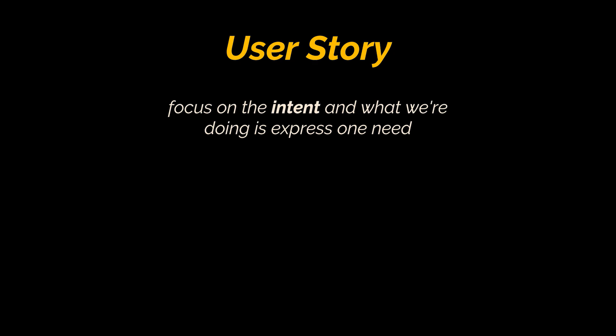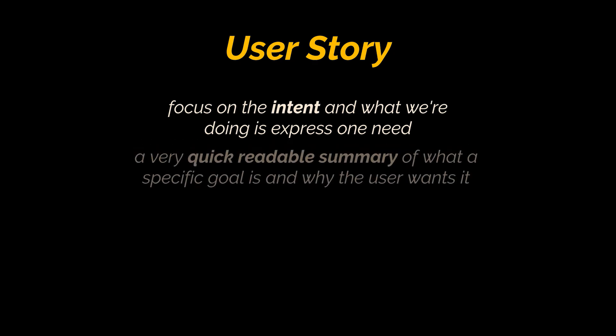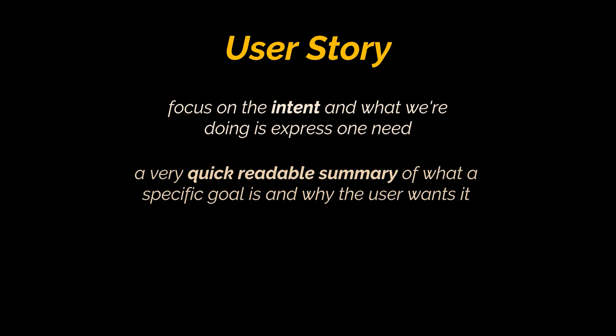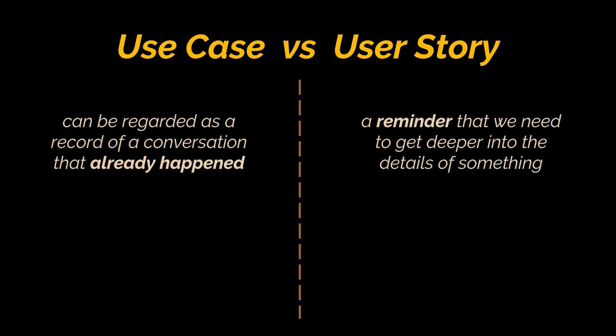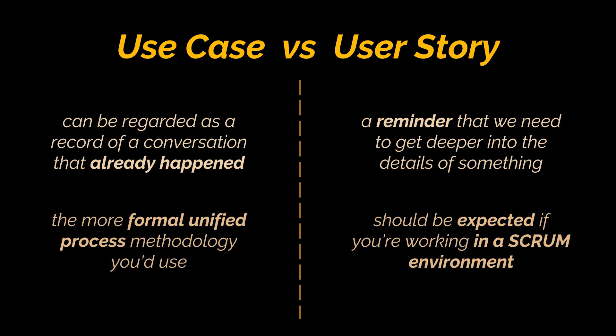User stories focus on intent — expressing one need without detailing alternate paths, exceptions, or technical information. They are a quick, readable summary of what a specific goal is and why the user wants it. It can be tempting to regard a user story as just a shorter use case, but that would be a mistake. A user story is a placeholder for a conversation — a reminder to get deeper into details. A use case, by contrast, is a record of a conversation that already happened, detailing how a goal may or may not be achieved. Use cases suit a formal unified process methodology, while user stories are central to scrum environments.